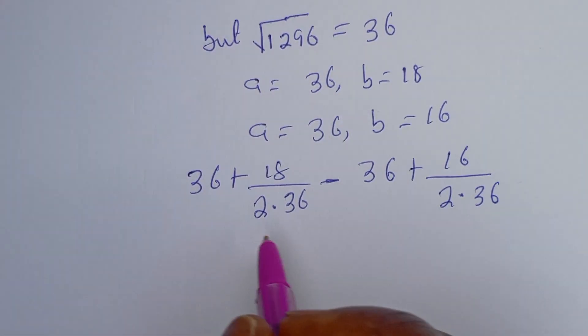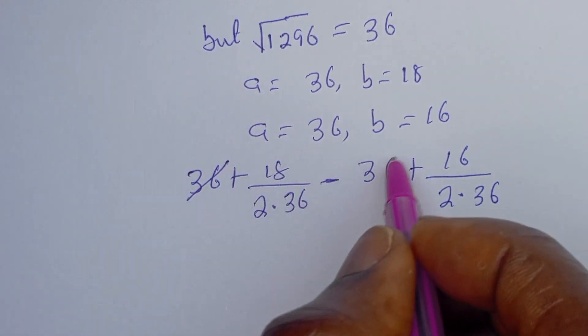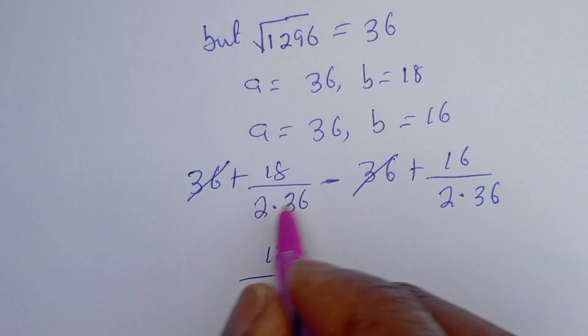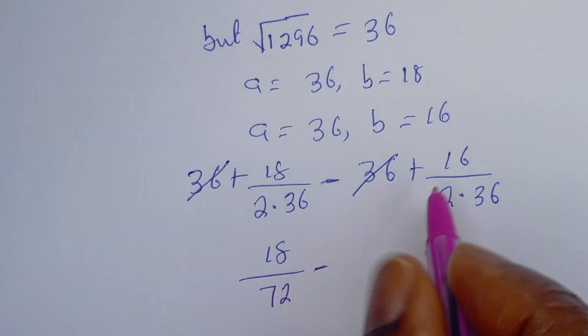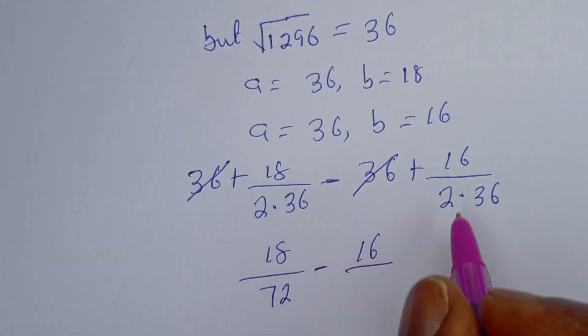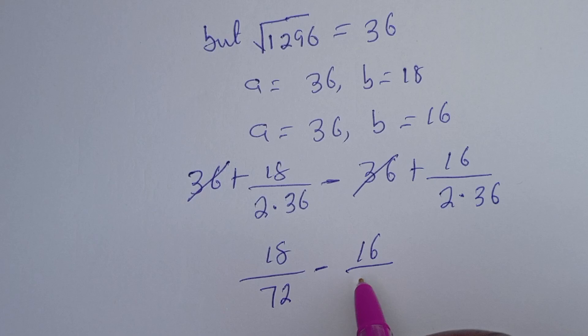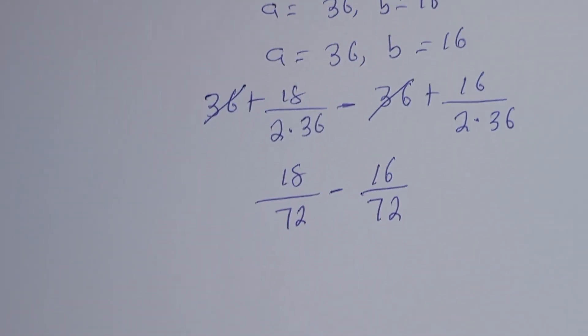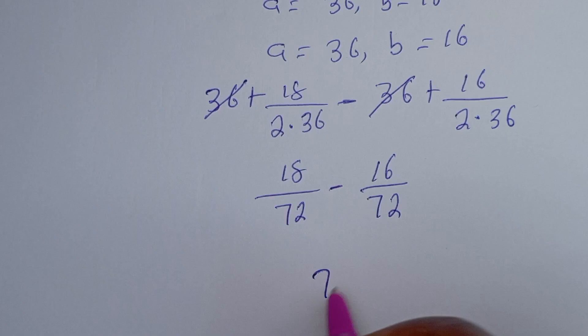Now we cancel this. We have 18 divided by 36 times 2, that is 72, minus 16 divided by 2 times 36, that is 72. So the denominator here is 72.